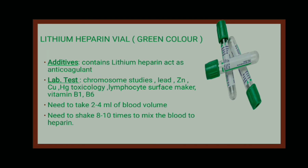The next vial is the heparin vial — lithium heparin or green color vial. The additive it contains is lithium heparin, which acts as an anticoagulant. The lab tests we can perform include chromosome studies, chemical element studies such as lead, zinc, copper, magnesium, and mercury toxicology, lymphocyte surface markers, and vitamin B1 and B6 levels. We need 4 ml of blood and should shake it 8 to 10 times after collection so that the heparin mixes with the blood and prevents coagulation.